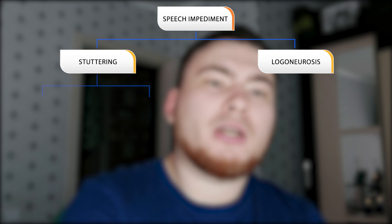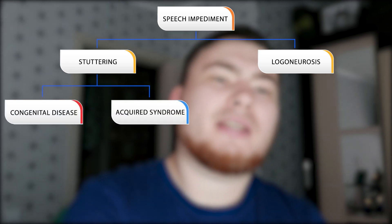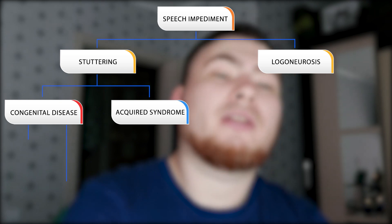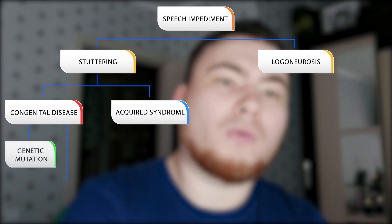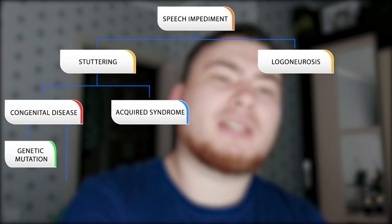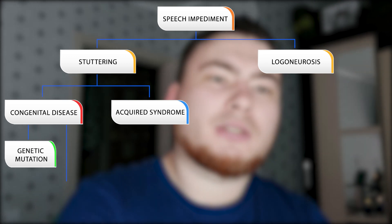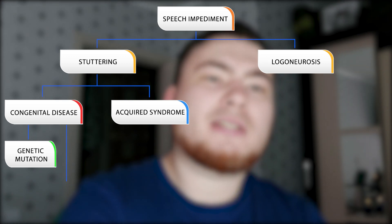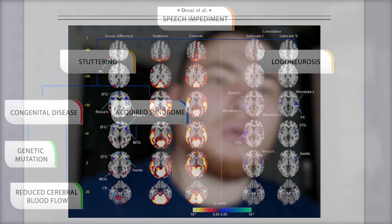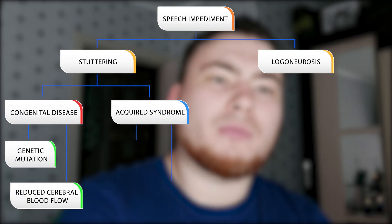Stuttering can be congenital or acquired. Congenital stuttering happens if a family has had a gene mutation passing from generation to generation — that type of stuttering is currently not curable. Stuttering can also be caused by reduced cerebral blood flow to the frontal and central parts of the brain, and this kind is also currently not curable.